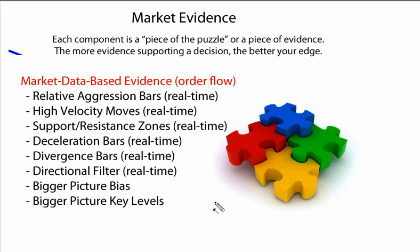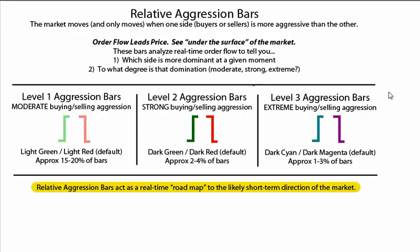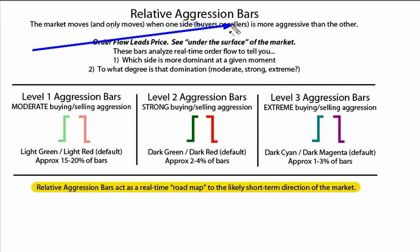The first piece of evidence we really like to focus on — our first building block — is what we call relative aggression bars. This is based on order flow. The idea is that the market is only going to move if one side, buyers or sellers, is more aggressive than the other. This allows you to see somewhat under the surface of the market — not just price action above the surface, but what's happening below, because order flow is what leads to price action movement.